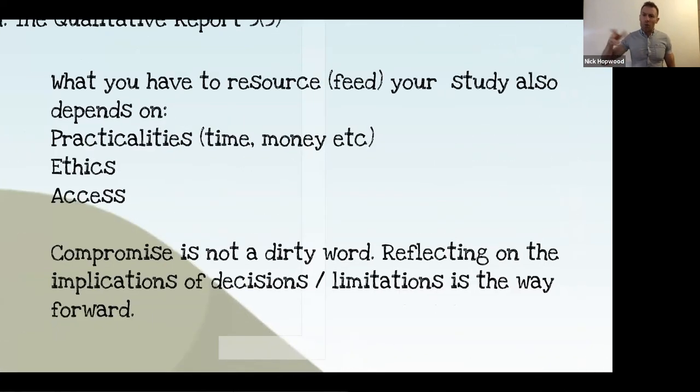We also have to think about what resources we have to pour on our research. There's a certain amount, they're always finite. You might have practicalities of time, a limitation on how long your degree is going to last or what you've been funded for, money, limitations on ethics and what you're allowed to do, or access and what gatekeepers will permit you to do. Compromise is not a dirty word. It's totally okay, it's normal. Research reflects the limitations of the real world. What you have to do in design is reflect on the implications of the decisions and limitations. It's not about saying oh my god it's useless because I would have liked to do this but I couldn't. It's about okay, I wasn't able to do that, what does that mean for my research and where I can go with it.